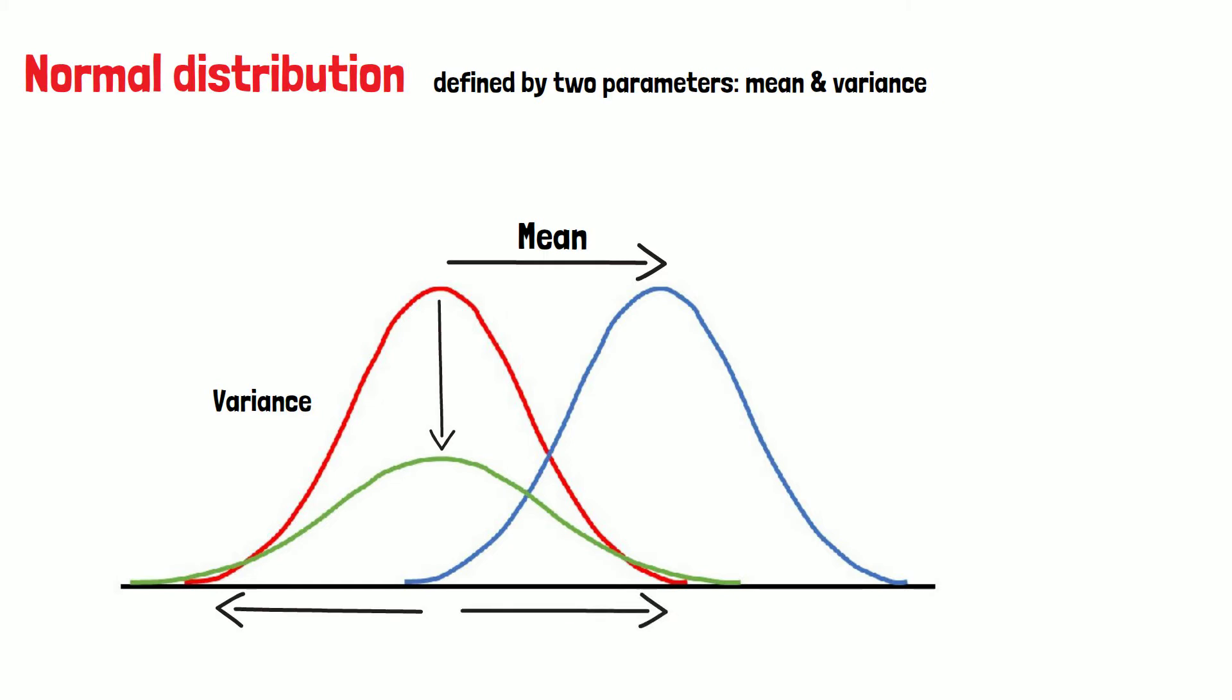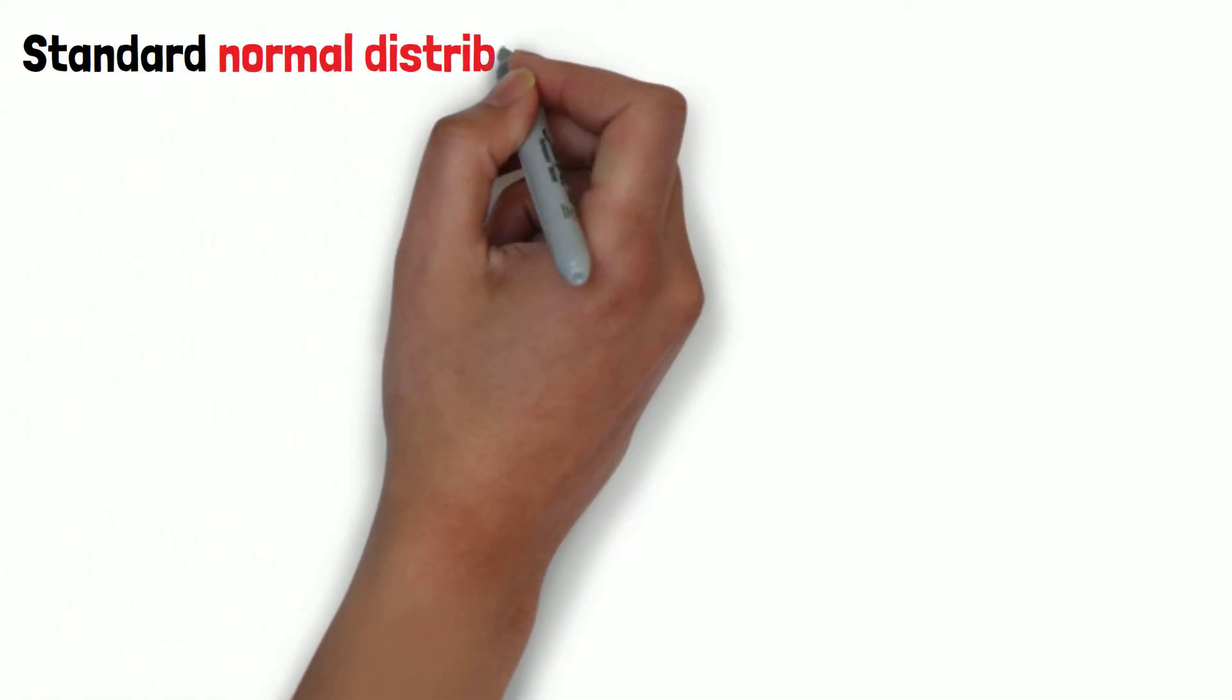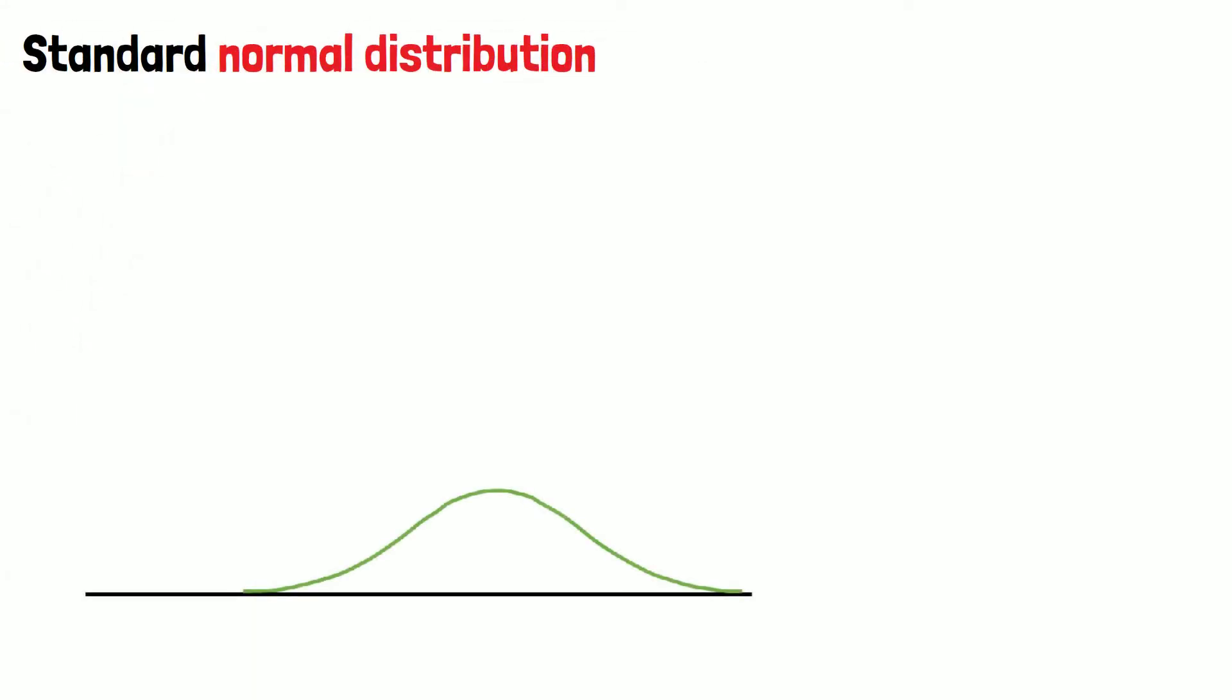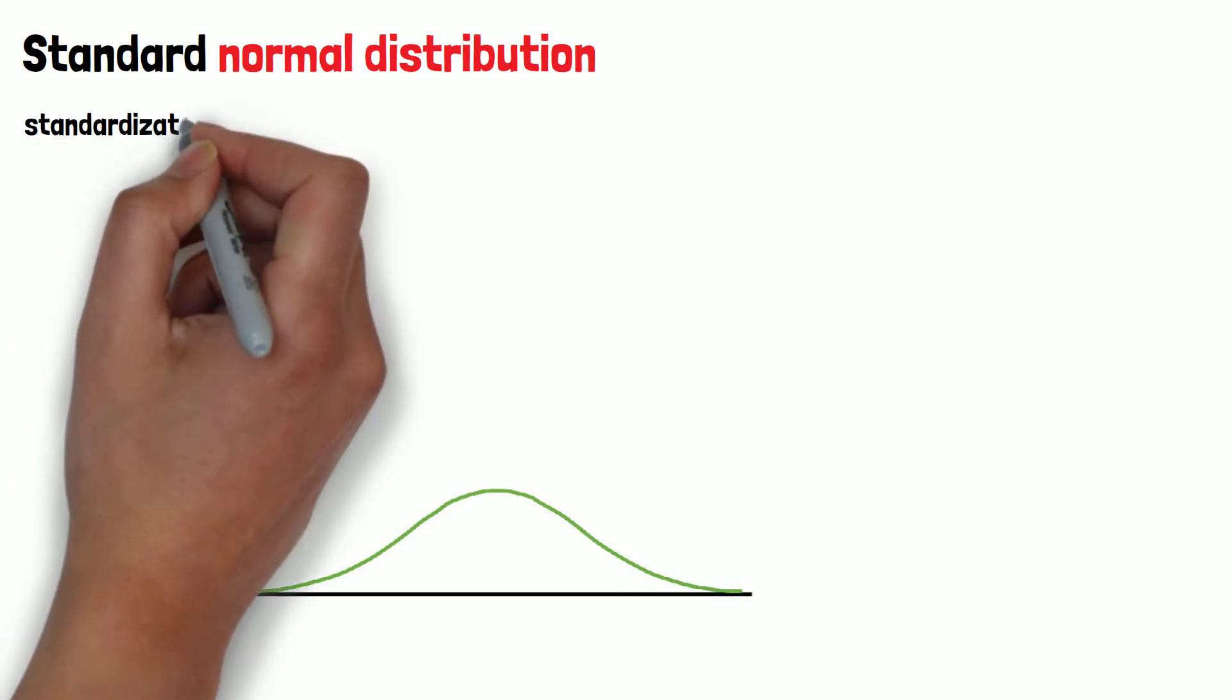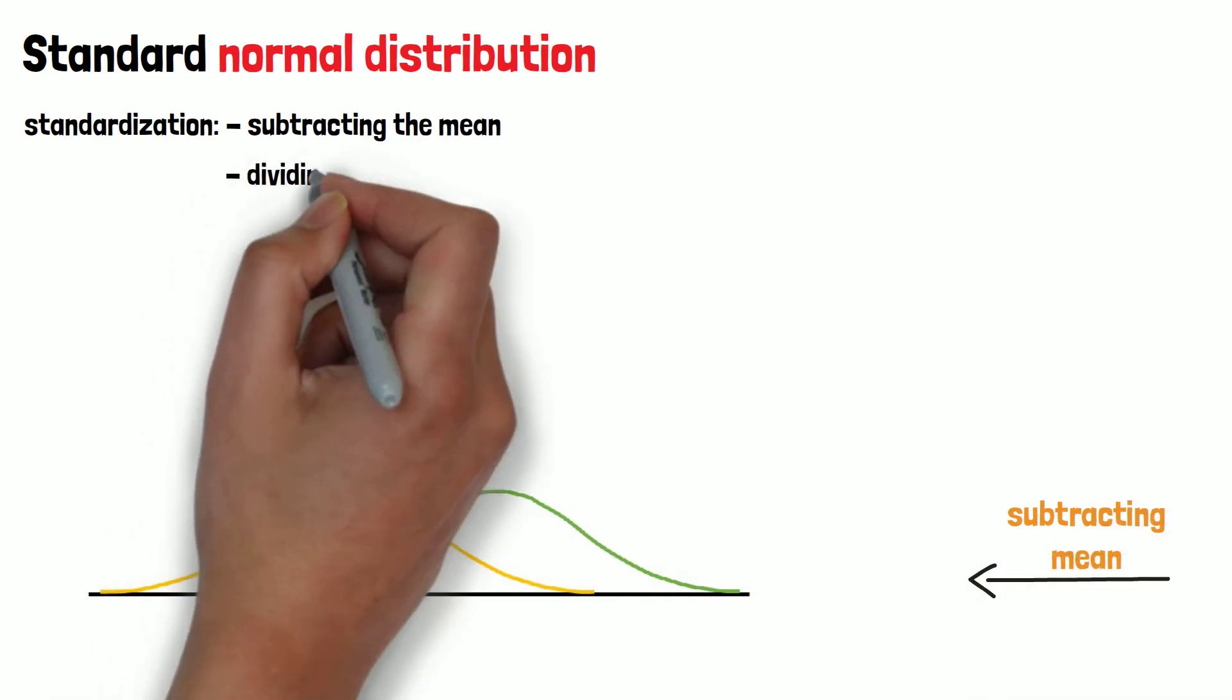One of the most important properties of the normal distributed variables is that they could be transformed into the standard normal distribution by standardization, which includes two steps. First, subtracting the mean. And second, dividing by the standard deviation.